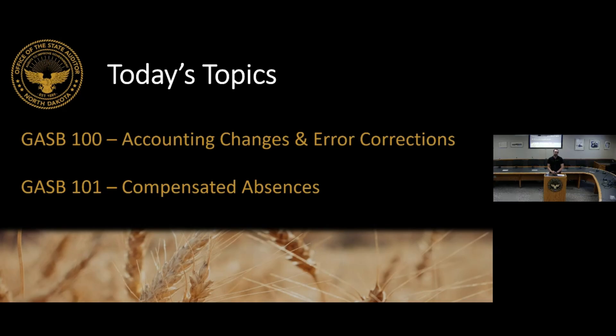With that, I'll get started. The two standards we'll be talking about are GASB 100 for accounting changes and error corrections, and GASB 101 for compensated absences. The first one we're going to talk about is GASB 100.